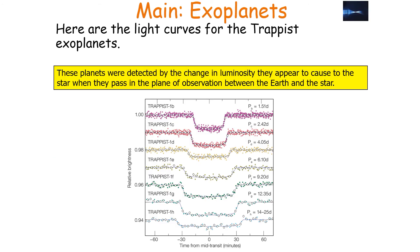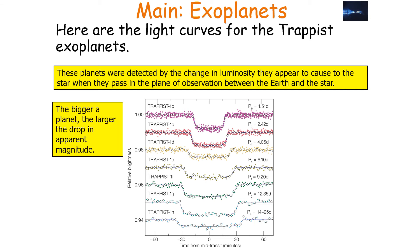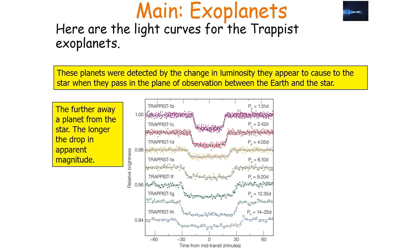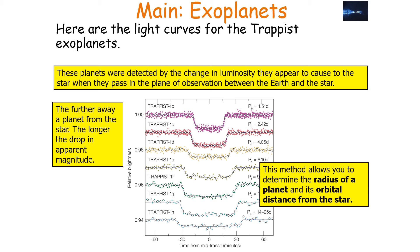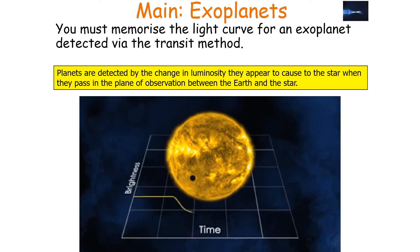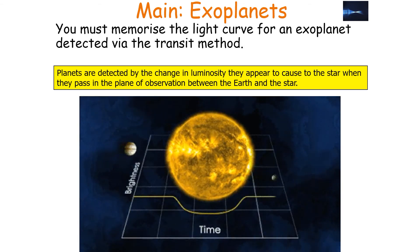You can see certain light curves produced by this transit method. Here are some light curves for the TRAPPIST exoplanets, which were detected by the change in luminosity they appear to cause to the star when they pass in the plane of observation between the Earth and the star. The bigger the planet, the larger the drop in apparent magnitude, and the further away a planet from the star, the longer the drop. This method allows you to determine the radius of a planet and its orbital distance from the star.